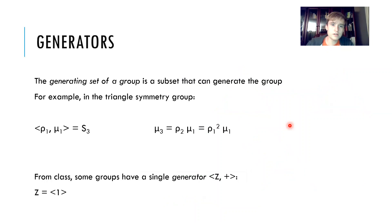The generating set of a group is what generates the group. It's a subset of the group, and if we combine the elements in any way in the subset, we can generate the entire group. For example, the triangle symmetry group can be generated by mu one and rho one.